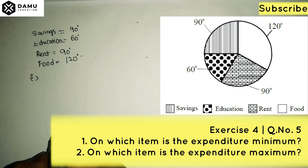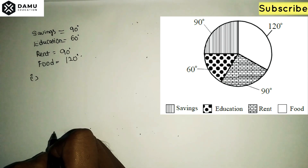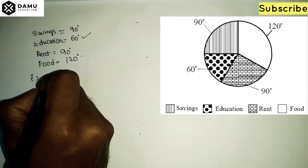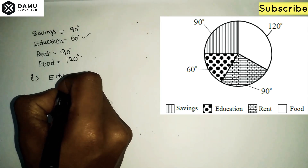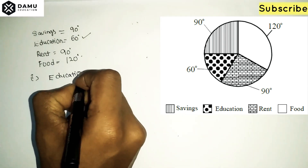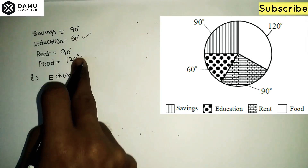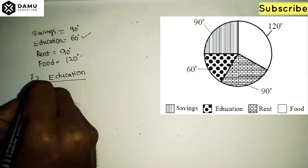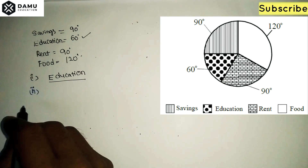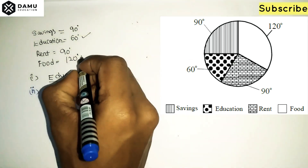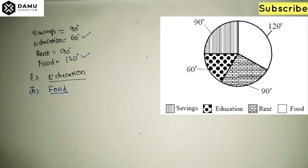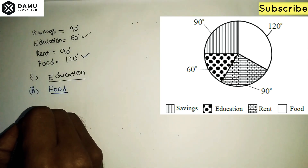The first question is: on which item is the expenditure maximum? The second question is: on which item is the expenditure minimum? 60 degrees is the minimum, so expenditure is minimum on education. The maximum angle is 120 degrees for food, so expenditure is maximum on food.